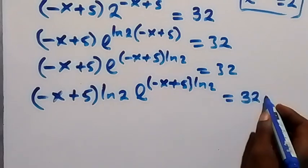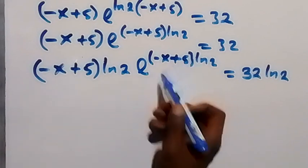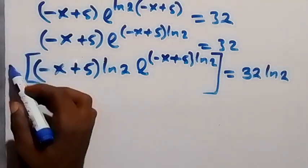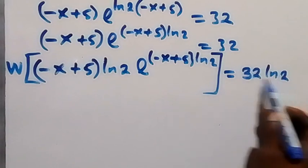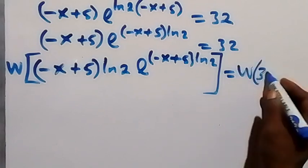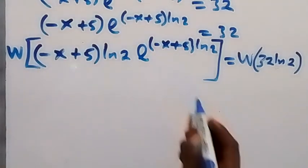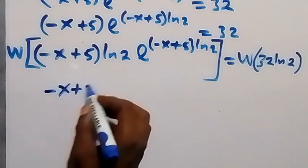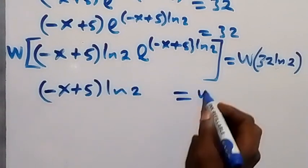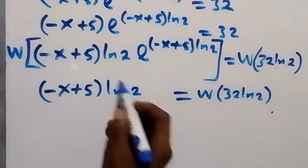Now we already have the coefficient the same as the power. Let's introduce the W Lambert function on both sides. So we apply W on both sides and we get minus x plus 5 times ln 2 equals W of bracket 32 ln 2. From here, we remove this ln 2 by dividing both sides by ln 2.